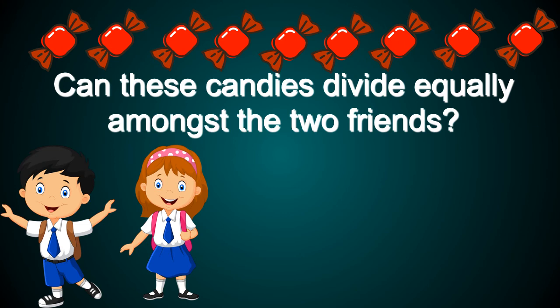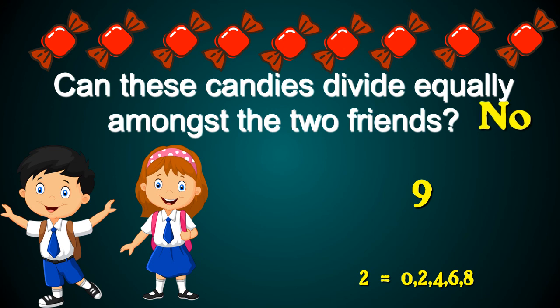Let's go back to our problem at the beginning. Can these candies divide equally amongst the two friends? To solve, we take our 9 candies and we need to see if 9 is divisible by 2. Remember, numbers that are divisible by 2 end in 0, 2, 4, 6, or 8. Because 9 does not end in those digits, it's not an even number. So, these candies cannot be divided equally amongst the two friends.